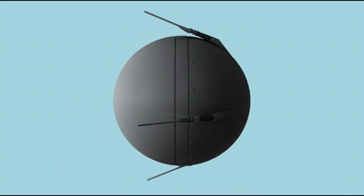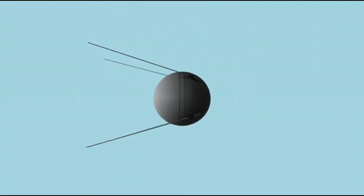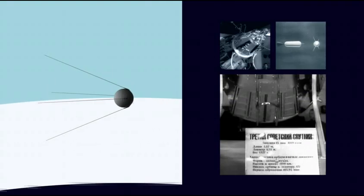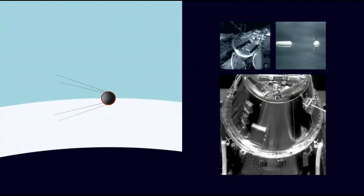The first man-made satellite was launched by the Russians in 1957. Called Sputnik, it lasted 22 days before the batteries ran out. It fell to earth three months later.